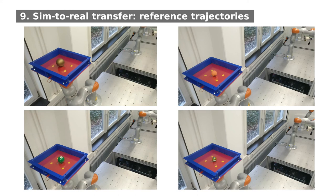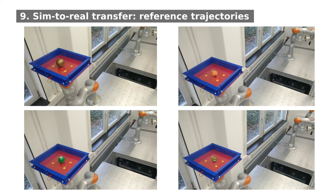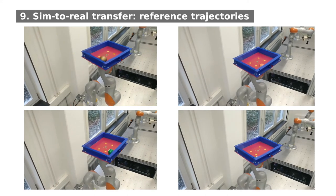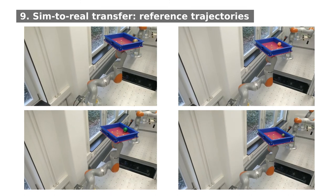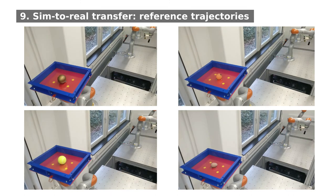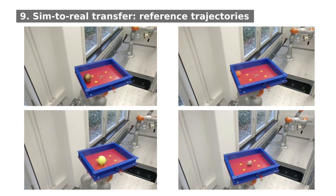The following videos show how the reference trajectories perform in the real world. We can see that without online adaptations, the ball immediately leaves its initial position and collides with the border of the plate.